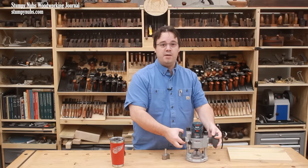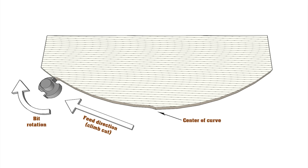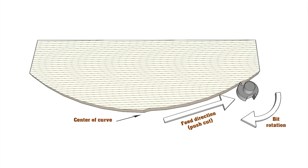Climb cutting is especially useful when routing a curve because the grain will often change direction at the apex of that curve. So you may be getting a nice clean cut with the grain to start out, but you find yourself going against the grain and getting tear out as you complete your curve. To avoid this, you might start at the center of the curve, make a climb cut along one half, and then a push cut along the other half depending on the direction of the grain.